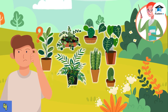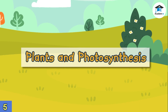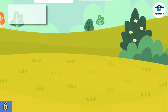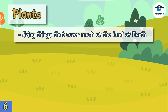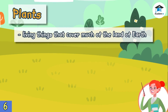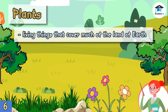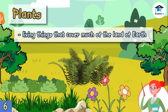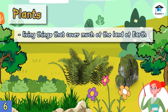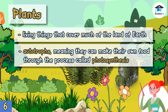Let us discover the answer in this lesson. Plants are living things that cover much of the land of Earth. You can see them everywhere — they include grass, trees, flowers, bushes, ferns, mosses, and more.